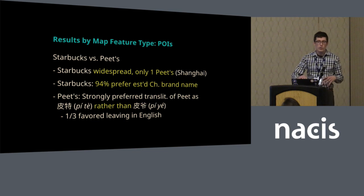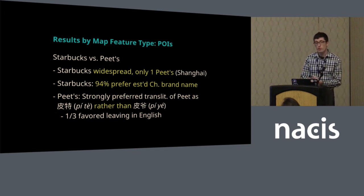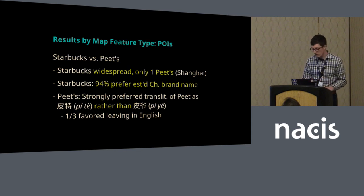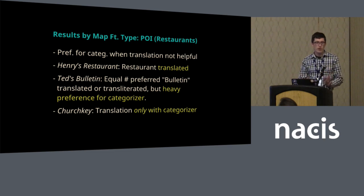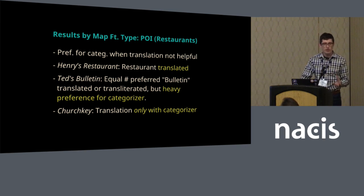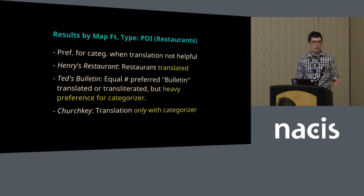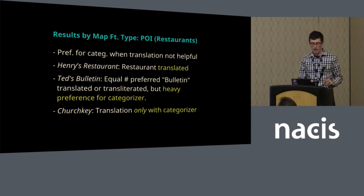This shows that when a place name gets established, speakers could prefer that. But when it's less established, speakers will prefer something a little bit closer to the English and a little more transparent. For restaurants with Henry's Restaurant, speakers strongly preferred restaurant to be translated, not transliterated. That fits with the translation being highly indicative of the type of place. With Ted's Bulletin, an equal number preferred translated or transliterated, but there was a heavy preference to have a categorizer like restaurant.